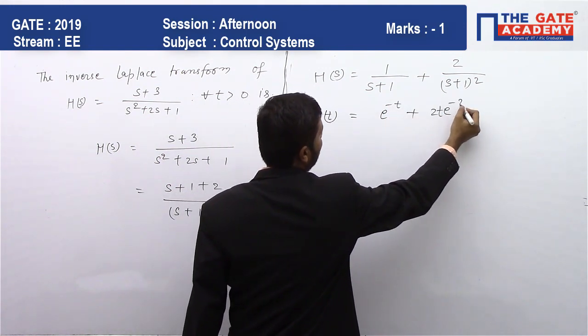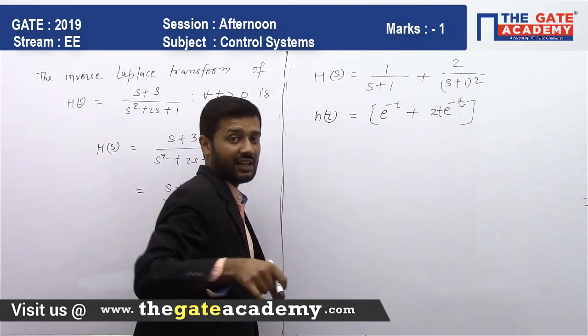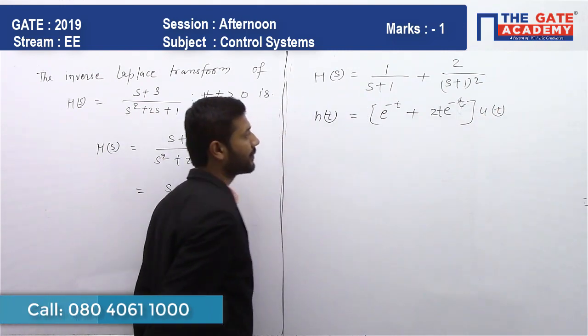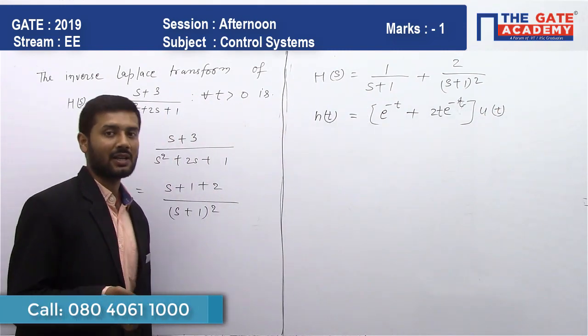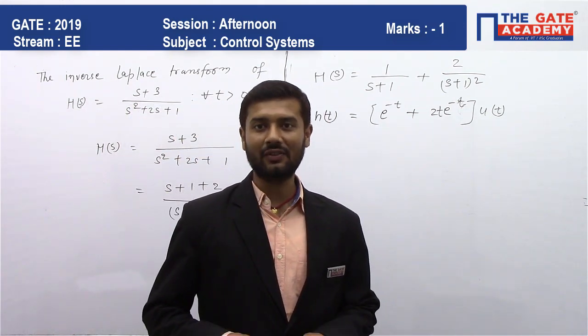It is for t > 0, that's why I'm multiplying it with u(t). So this is our inverse Laplace transform of this H(s).